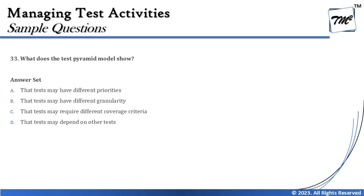Let's move on to the next question — question number 33. It says: what does the test pyramid model show? So we remember that pyramid example which has representation of two important things at each level — that is the number of test cases and the amount of automation.